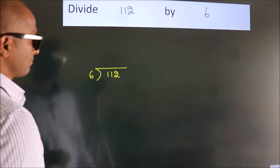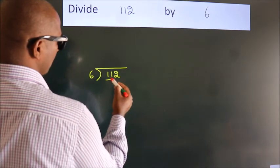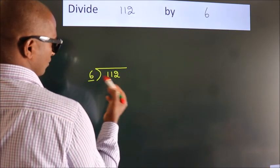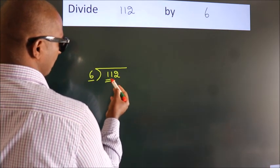Next. Here we have 1, here 6. 1 is smaller than 6. So we should take 2 numbers, 11.